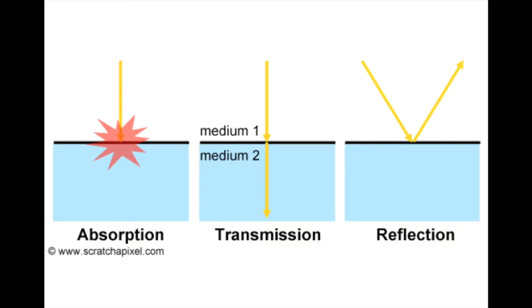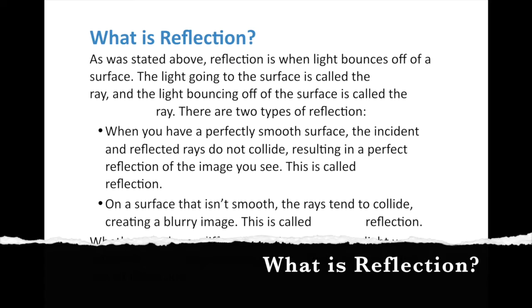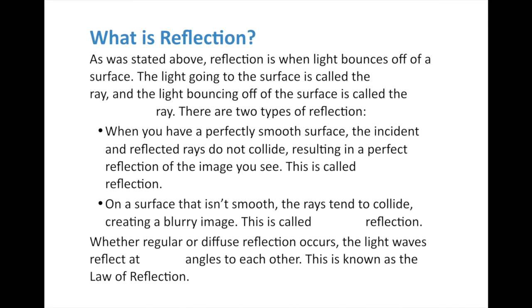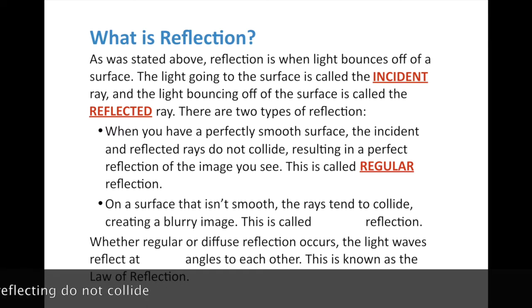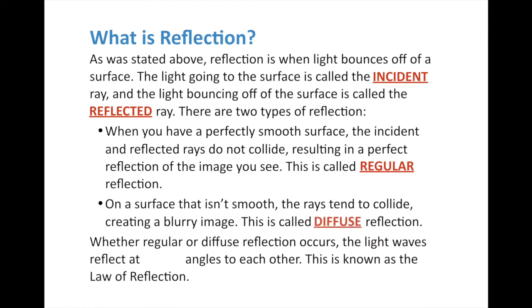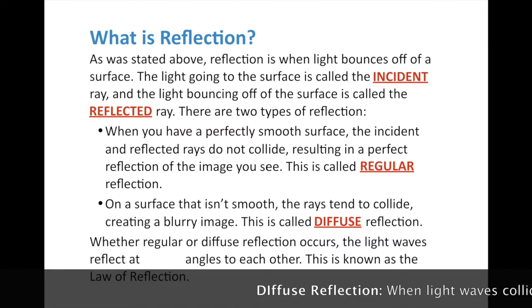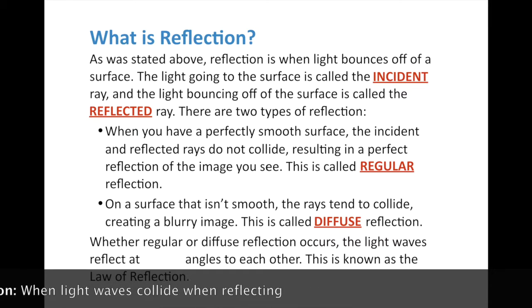What we're going to be focusing on is transmission and reflection. Let's look at reflection. If you have a perfectly smooth surface, the incident and reflected rays don't collide — they just bounce off nice and simple, giving a perfect image. This is what we call regular reflection. On a surface that isn't smooth, the rays tend to collide and bounce into each other, creating a blurry image. This is what we call diffuse reflection. A good example would be looking at the surface of a pond — nice and smooth — but when you throw a rock in, the rippling waves distort the image.